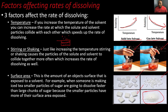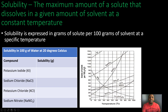So to summarize: the smaller the particles, the faster it dissolves; the larger the particles, the slower it dissolves. Now, solubility is the maximum amount of solute that dissolves in a given amount of solvent at a constant temperature. Solubility is expressed in grams of solute per 100 grams of solvent at a specific temperature.